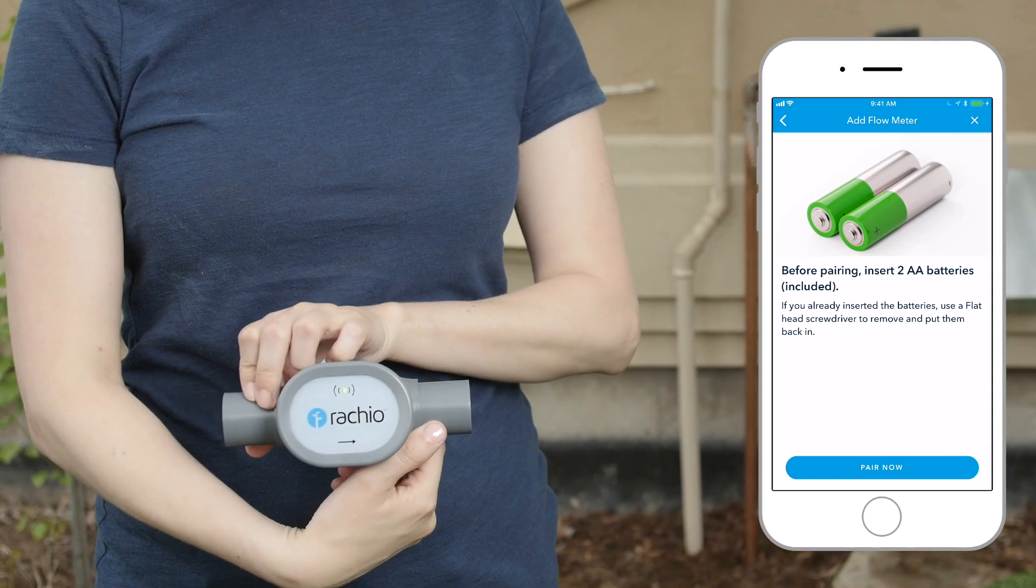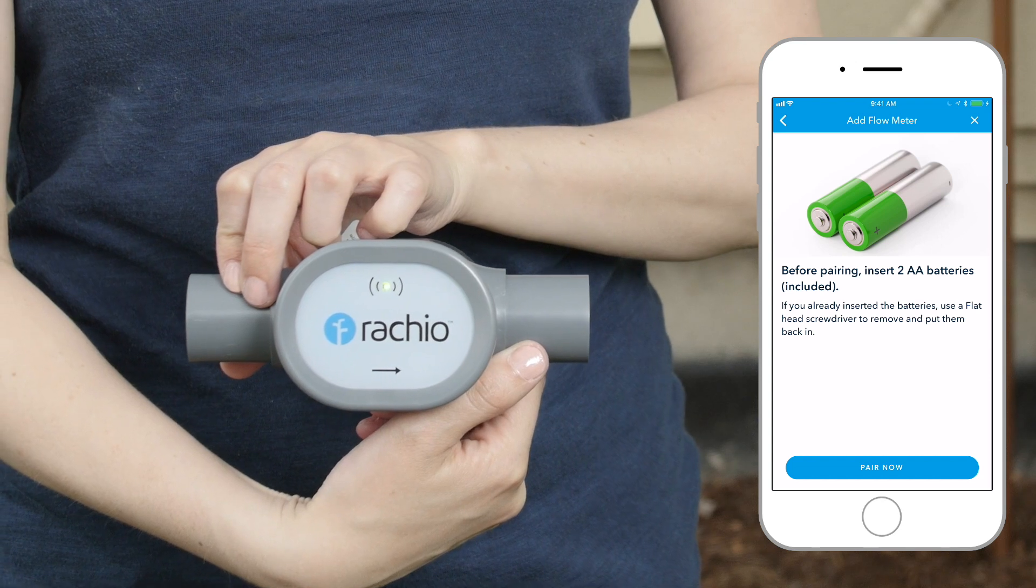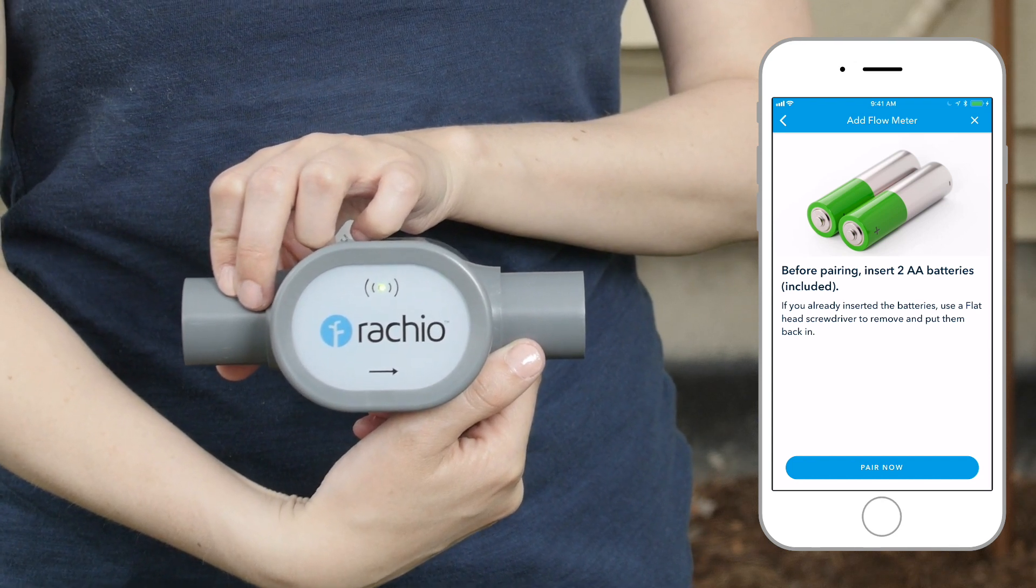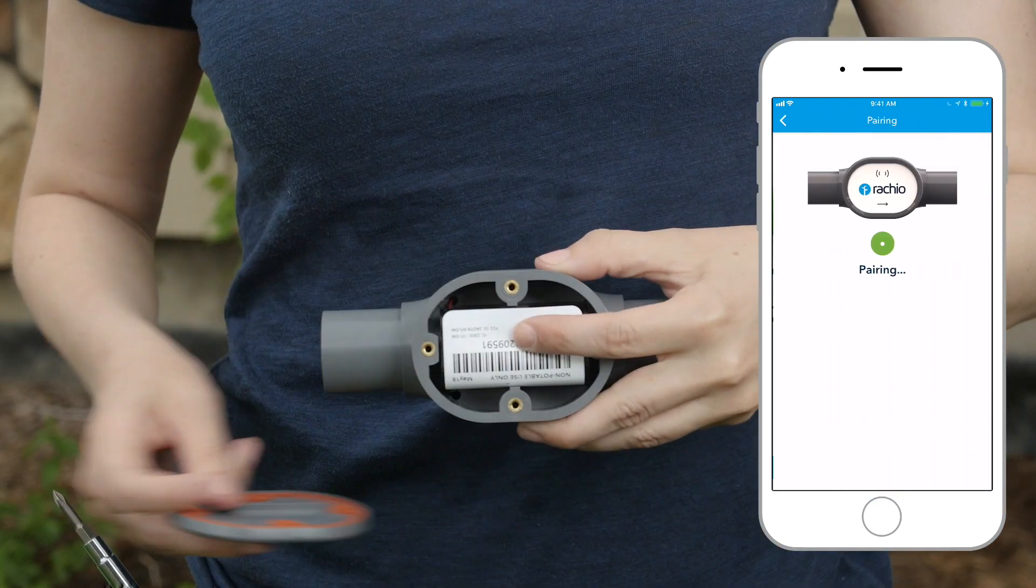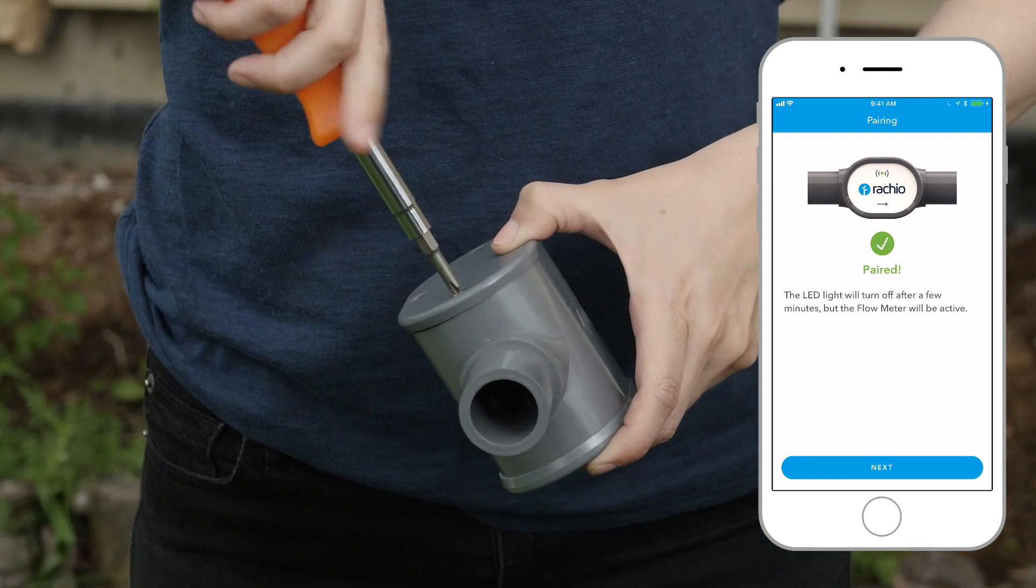A momentary green light confirms the signal is strong enough. Make sure the flow meter is within range of your Rachio 3 before cutting any pipe. Fold the barcode over the batteries and tightly secure the battery cover.